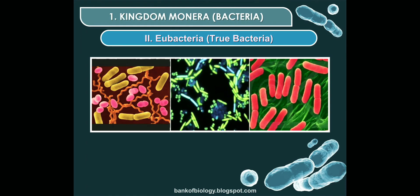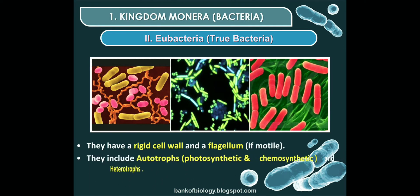The second type is eubacteria, also called true bacteria. They have a rigid cell wall. If they are motile, they have flagella. Eubacteria include autotrophs and heterotrophs. Autotrophs are classified into photosynthetic and chemosynthetic types. Heterotrophs are saprophytic and parasitic.